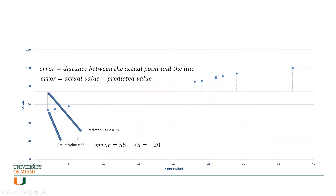Here is how to calculate it. The distance, or in other words the error, is the distance between the actual point and the line. For the first point, the actual value was 55 and the predicted value was 75 — because if you look at the purple line, the predicted grade for that person is about 75 on the y-axis. So we calculate the error: actual minus predicted, which is 55 minus 75, giving us negative 20.